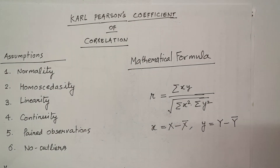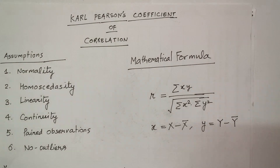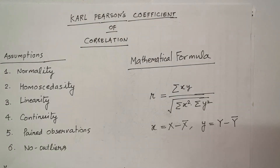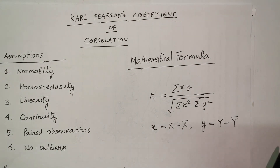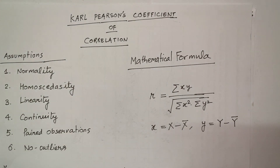In this video I will be discussing Karl Pearson's coefficient of correlation. First, let's have a particular insight on what it is all about, and then we will discuss a simple problem. Karl Pearson has given a coefficient of correlation — but first of all, it doesn't establish a relationship on its own; the relationship amongst the variables must be established logically.